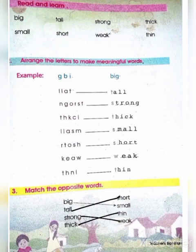Next is: arrange the letters to make meaningful words. Aap ko ye letter diya huye hai, in ko aap ko arrange karna hai. Example dekhte hai — likha hai G, B, I. Is ka aap ko kya karna hai? Big — B, I, G.